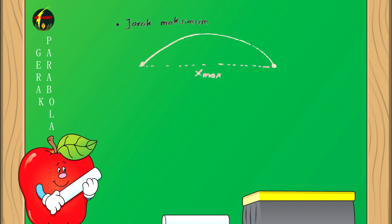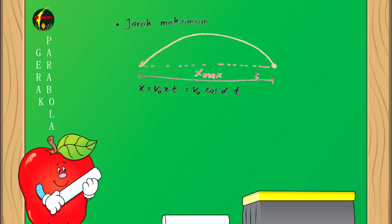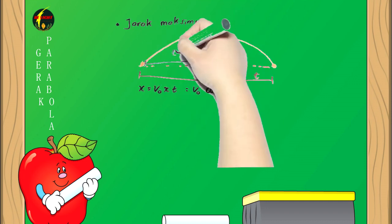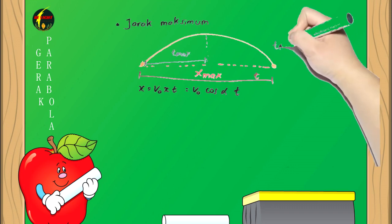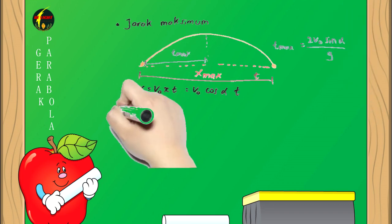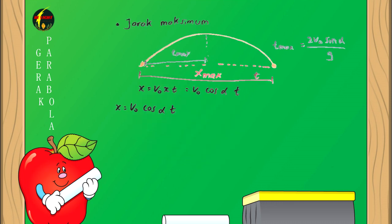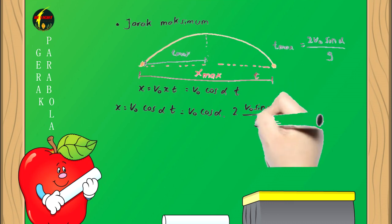Untuk jarak maksimum, menggunakan persamaan X = V0X × T = V0 cos α × T. Waktu untuk mencapai titik terjauh adalah dua kali waktu mencapai ketinggian maksimum, sehingga Tmax = 2V0 sin α / g. Jadi X = V0 cos α × 2V0 sin α / g, disederhanakan menjadi Xmax = 2V0² cos α sin α / g.